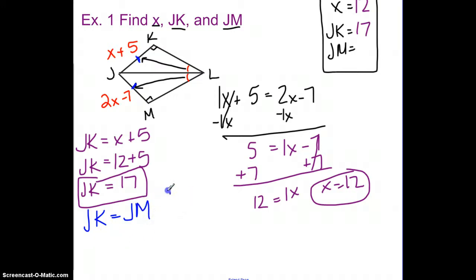Because remember how we talked about this is part of that angle bisector theorem. Now I'm just writing this here so you kind of remember what you're doing. But this would mean that JM is also equal to 17. Last piece for my box over here would be that 17.